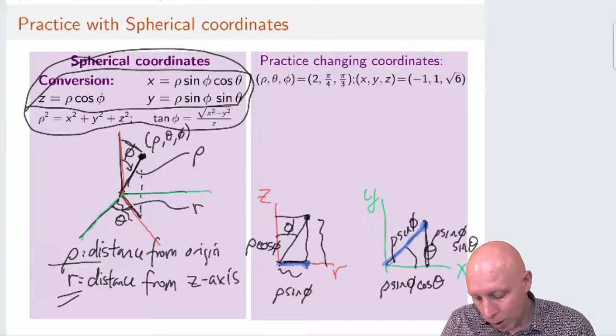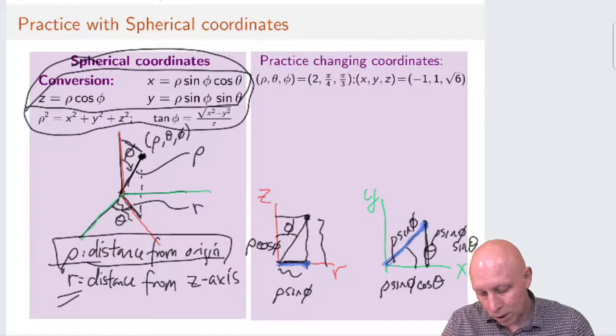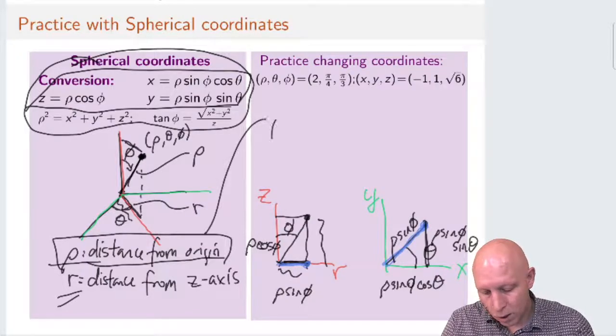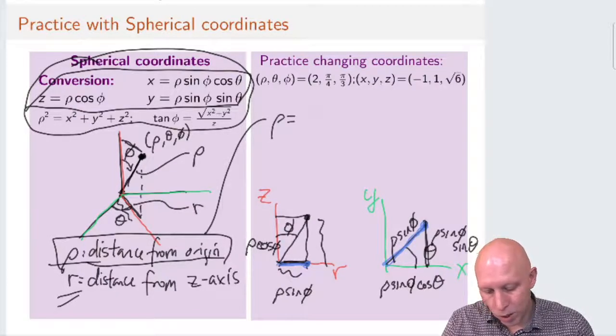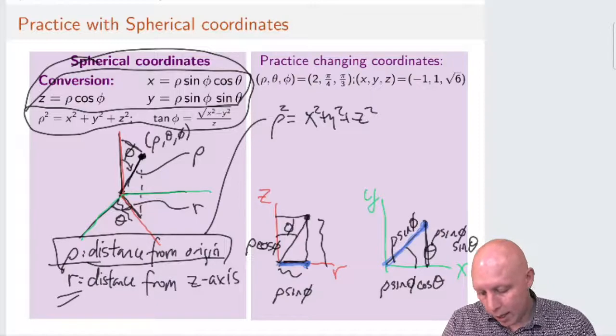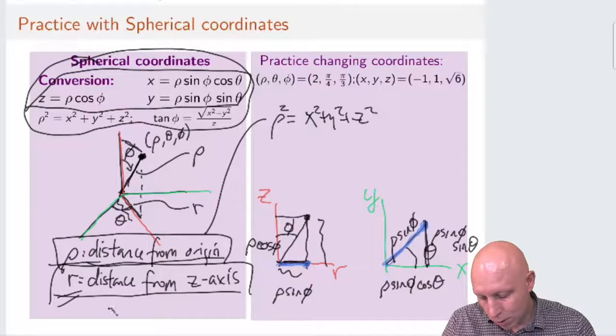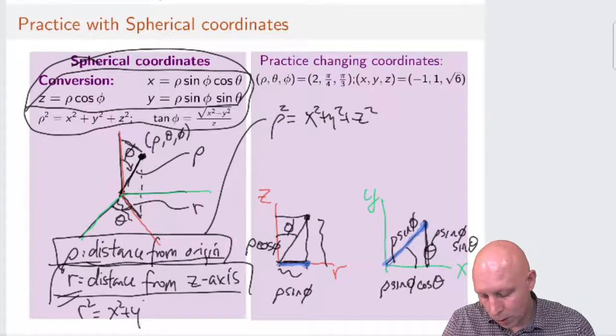And so we can do that by recognizing that the distance from the origin rho is equal to—rho squared is equal to x squared plus y squared plus z squared. And then we can recognize that the distance from the z-axis r squared is equal to x squared plus y squared.